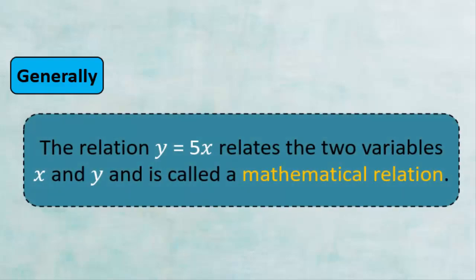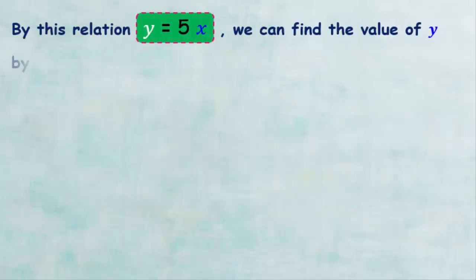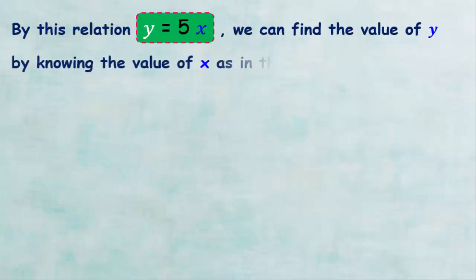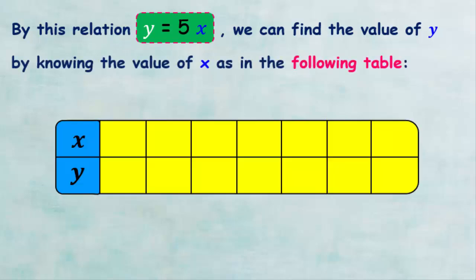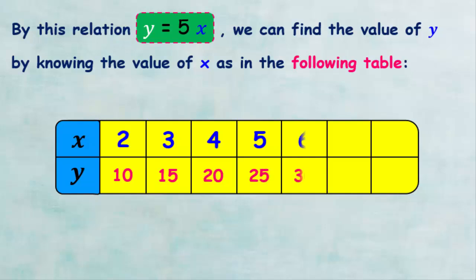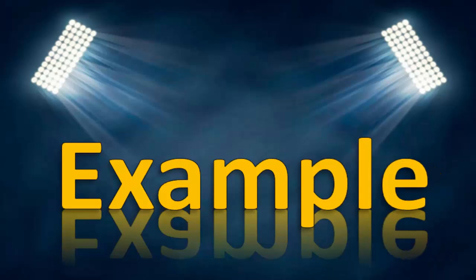From this relationship we can get the value of Y according to the value of X. If X equals 2, then Y equals 10. If X equals 3, then Y equals 15. If X equals 4, then Y equals 20. If X equals 5, then Y equals 25, and in the same way with any number.